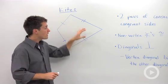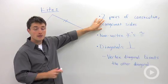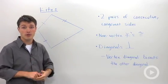The first key part about how to identify a kite is that you have two pairs of consecutive congruent sides, not opposite like in a parallelogram or a rectangle.